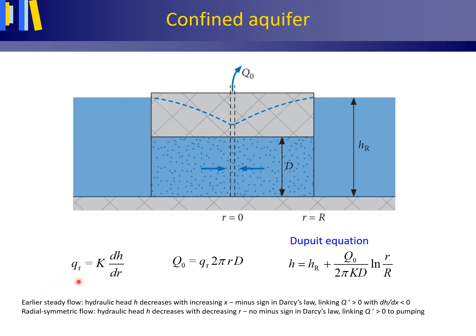qr is the radial symmetric volume flux density in metres per day. K is the saturated hydraulic conductivity in metres per day. dH/dr is the hydraulic gradient in the direction of the pumping well. Combining the continuity equation for this radial groundwater flow case with Darcy's law delivers the following potentiometric drawdown surface as a function of the radial distance from the pumping well, small r.